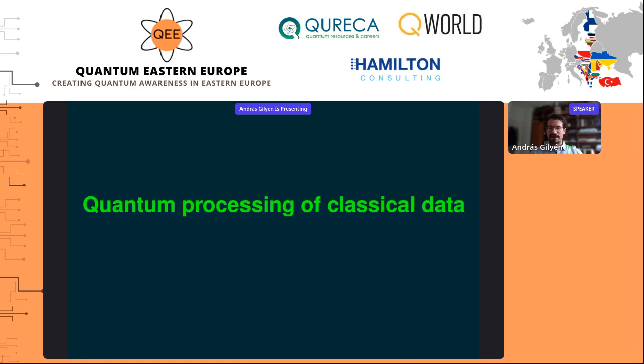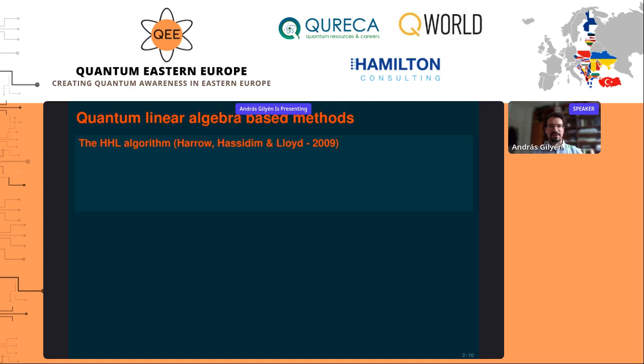Let me start with the quantum processing of classical data. This was historically the first area studied and has the greatest literature. One could say this quantum machine learning topic started with the HHL algorithm by Harrow, Hasidim, and Lloyd in 2009, which is not directly a machine learning algorithm, but attempts to solve a potentially exponentially large linear equation system in a fundamentally quantum way.